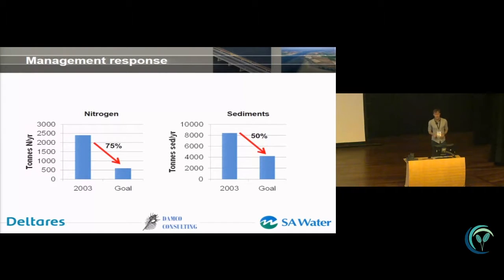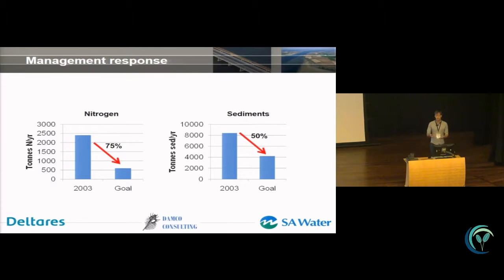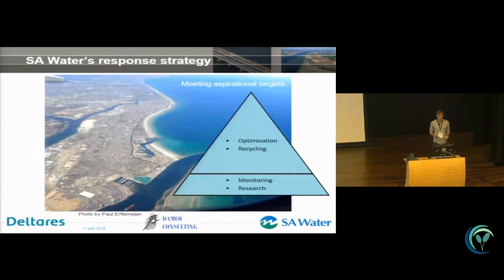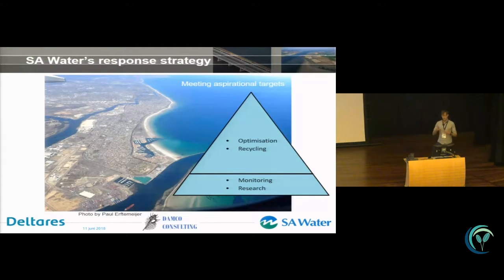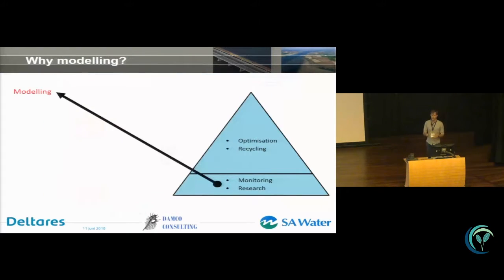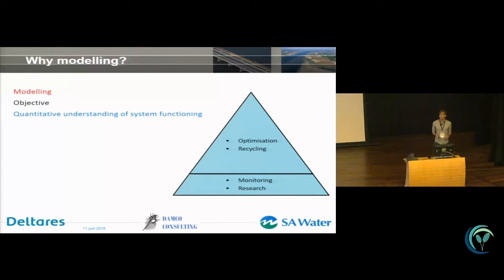Substantial reductions were needed, which meant substantial investment. The target numbers — like 75 percent and 50 percent — came from expert judgment, which is hard to make when you can't really quantify what's driving the system. SA Water was thinking: we do want to improve this environment, it's our own backyard, our children play on the beach — but we really want to spend our money well. So they came up with an approach to figure out what's really happening in the system and work on things that really matter.